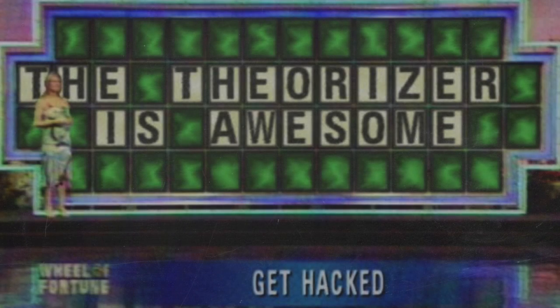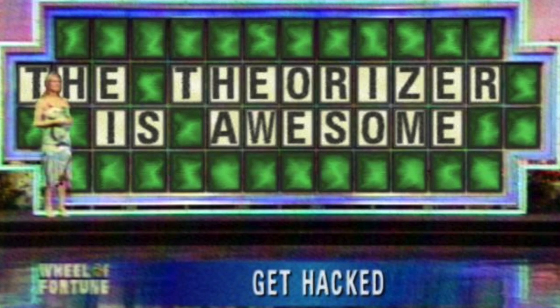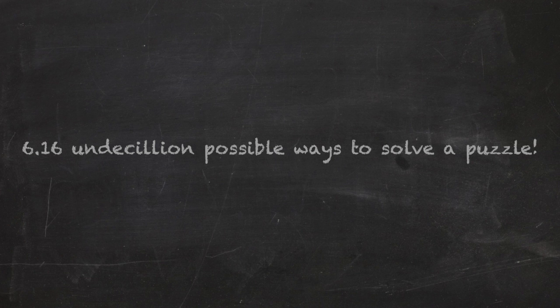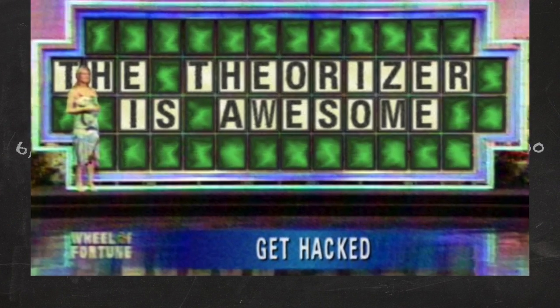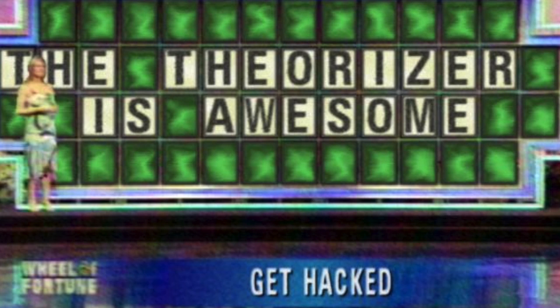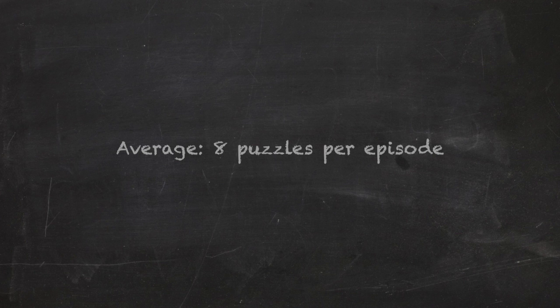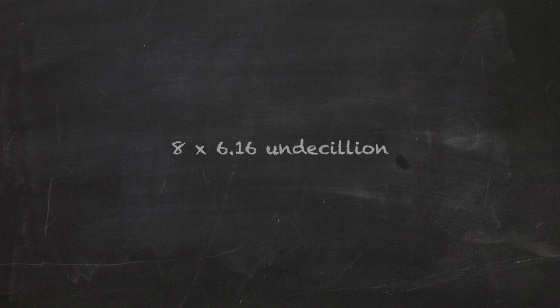Anyways, calculating this gives us our number of total possible guesses for one round of Wheel of Fortune, 6.16 undecillion. That number looks like this stretched out. Oh, but that's only for one round. And since Wheel of Fortune averages at eight puzzles per episode, simple multiplication lowers the stakes even further and makes it 49 undecillion.